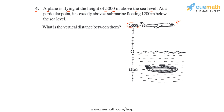At a particular point, the plane is exactly above a submarine floating 1200 meters below the sea level. This is the submarine, floating 1200 meters below the sea level.